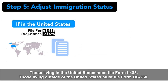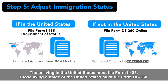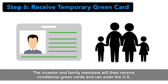Those living in the United States must file Form I-485. Those living outside of the United States must file Form DS-260. The investor and family members will then receive conditional green cards and can enter the U.S.